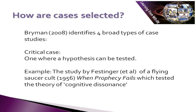How are case studies selected? There are some general typifications that Breiman outlines in 2008, where there are four broad types of case studies. The first is a critical case — one where a hypothesis can be tested. For example, the study by Festinger et al. of a flying saucer cult in 1956, When Prophecy Fails, which tested a theory of cognitive dissonance.